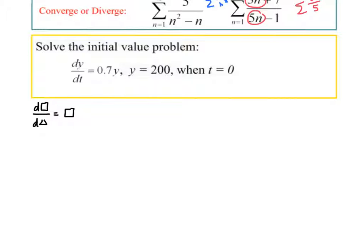First thing I would do is multiply both sides by dt and then divide both sides by y. So now we've separated. The y's are on the left and the non-y's are on the right. So I've got 1 over y dy equals 0.7 dt.